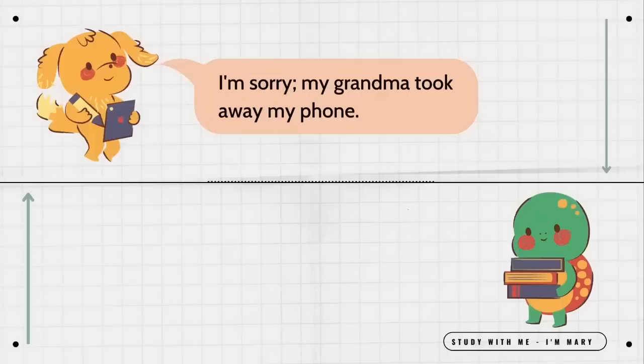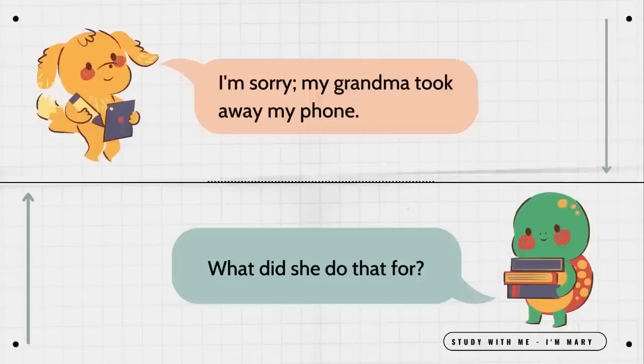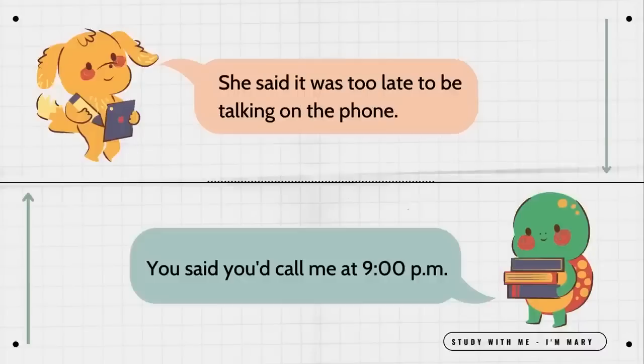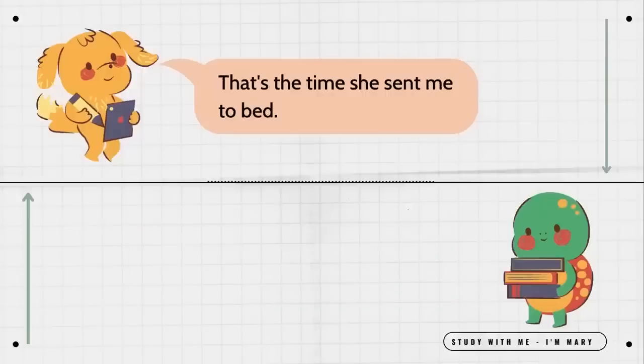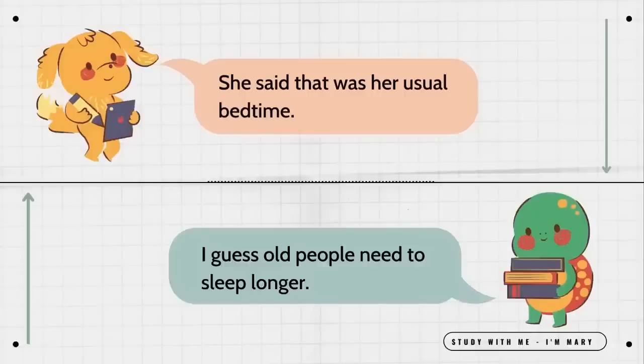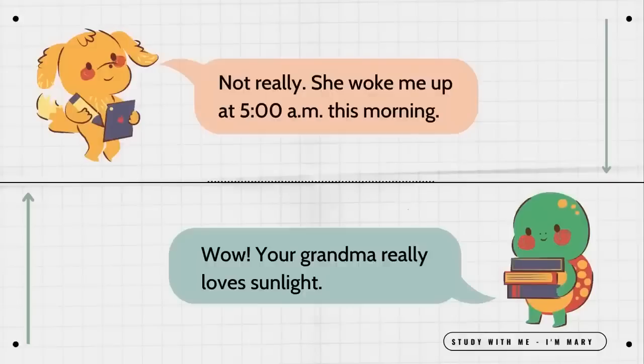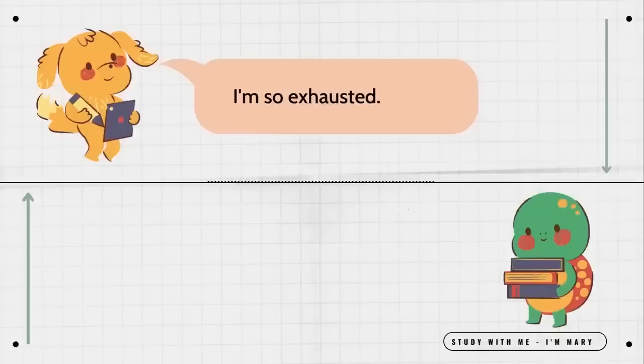I'm sorry, my grandma took away my phone. What did she do that for? She said it was too late to be talking on the phone. You said you'd call me at 9pm. That's the time she sent me to bed. How can anyone sleep so early? She said that was her usual bedtime. I guess old people need to sleep longer. Not really. She woke me up at 5am this morning. Wow, your grandma really loves sunlight. I'm so exhausted.